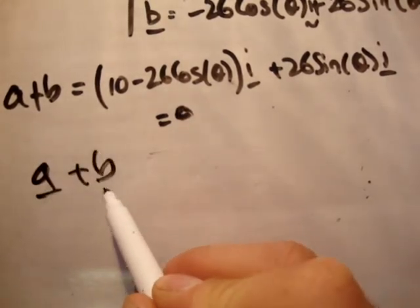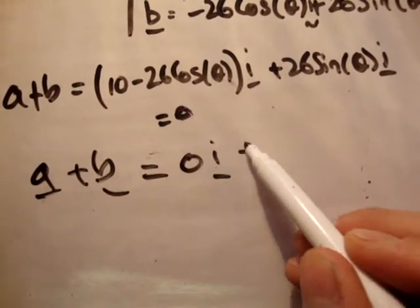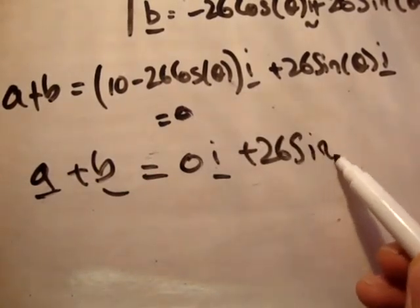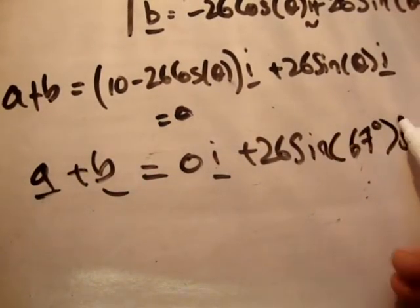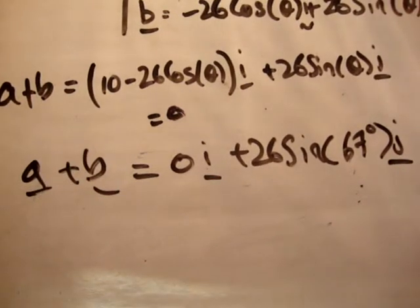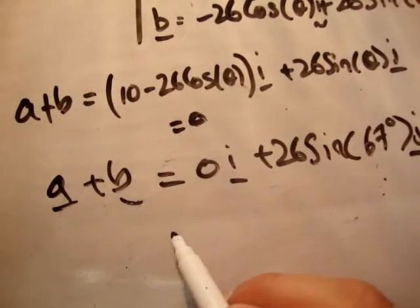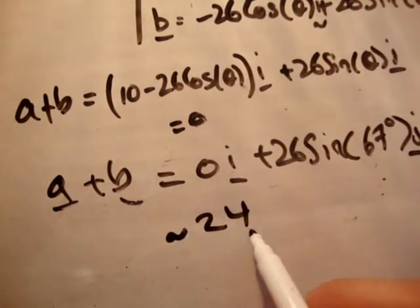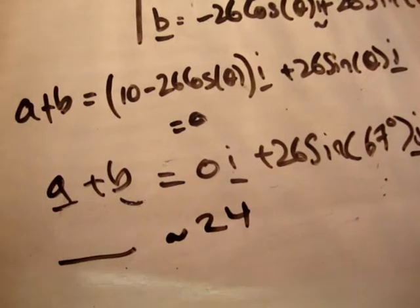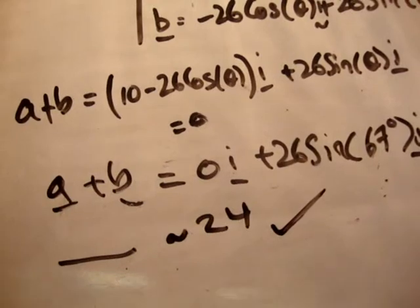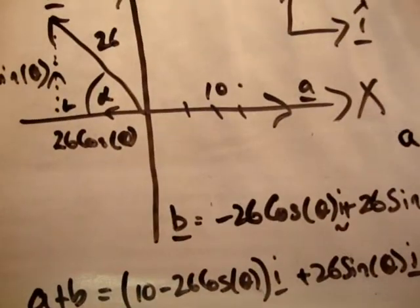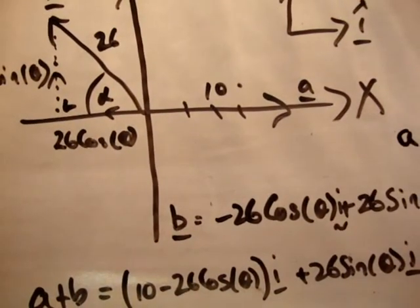So therefore a plus b is equal to 0 i-hat plus 26 times the sine of 67 degrees j-hat. Plug that into our calculator. 26 times the sine of 67 is equal to 23, approximately 24. So that's the magnitude of a plus b. Look in the back of the book, and that's correct. Okay, so that's doing it very quickly of course. This is nothing new I hope. If it is new to you, then look at my previous videos.